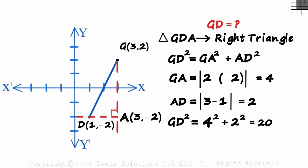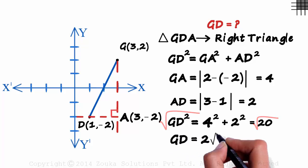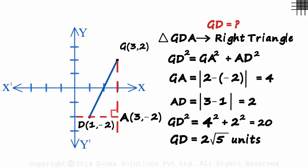Solving this, we get GD squared as 20. Taking the square root on both sides, GD will be 2 root 5 units. This is interesting. Try and understand what we did. GD is the root of 4 squared plus 2 squared. But what is 4 squared and 2 squared?